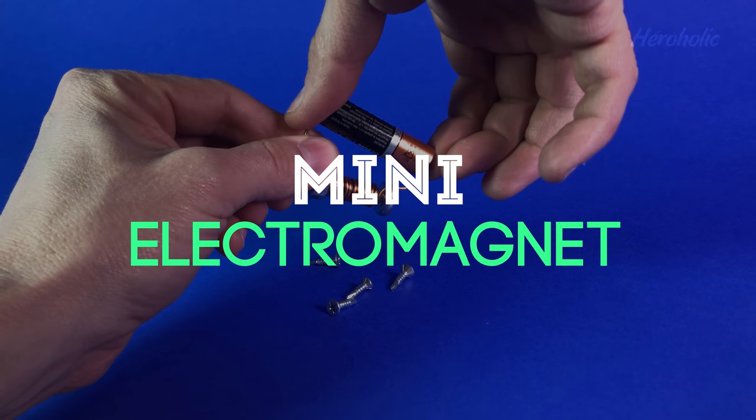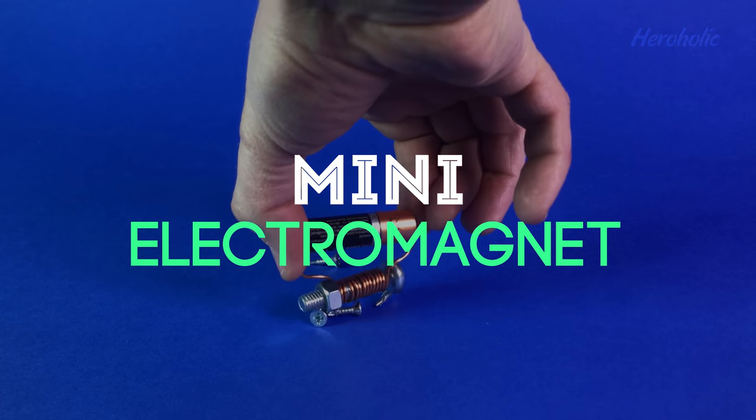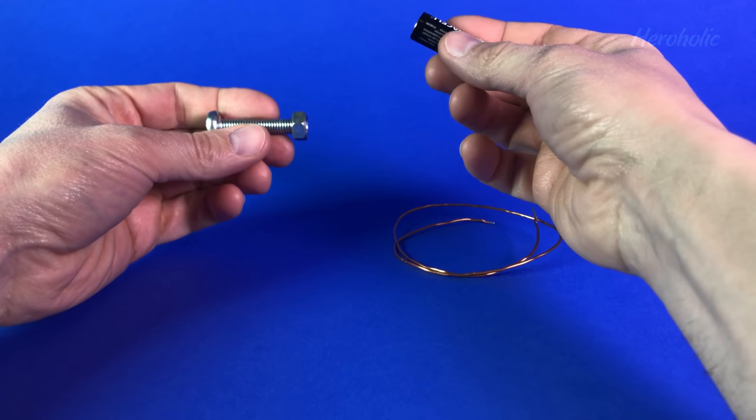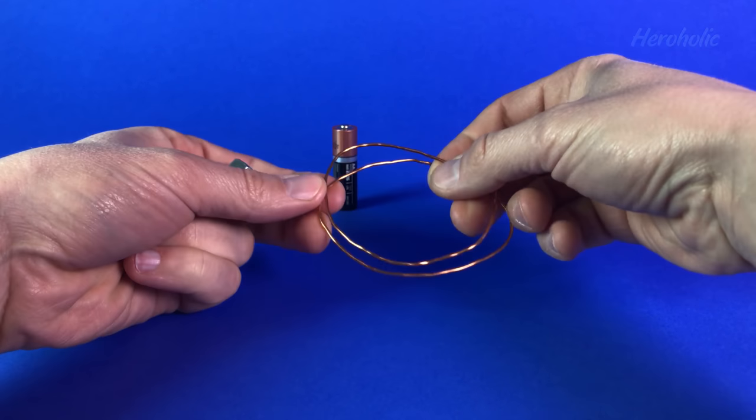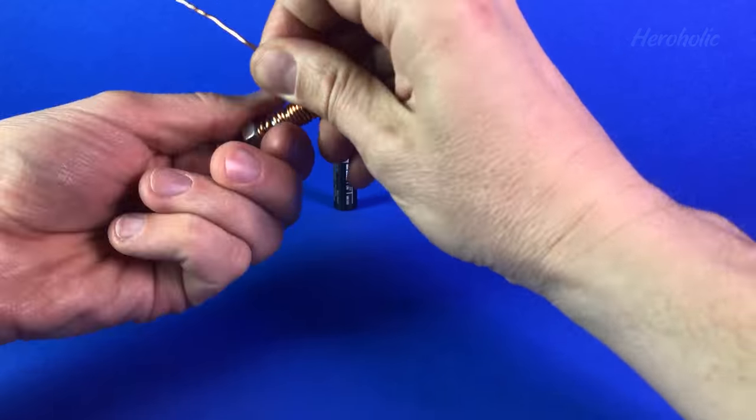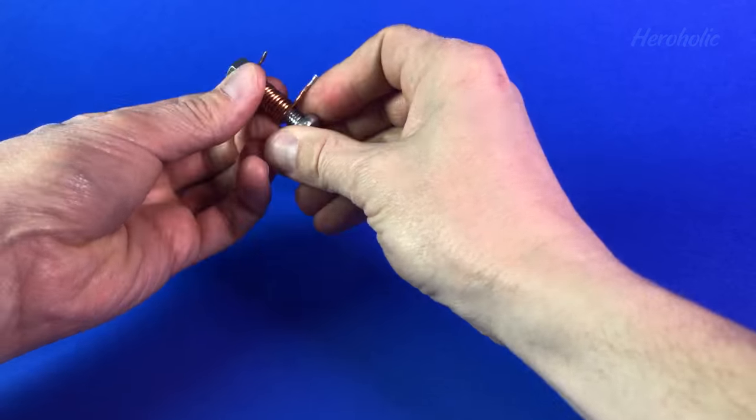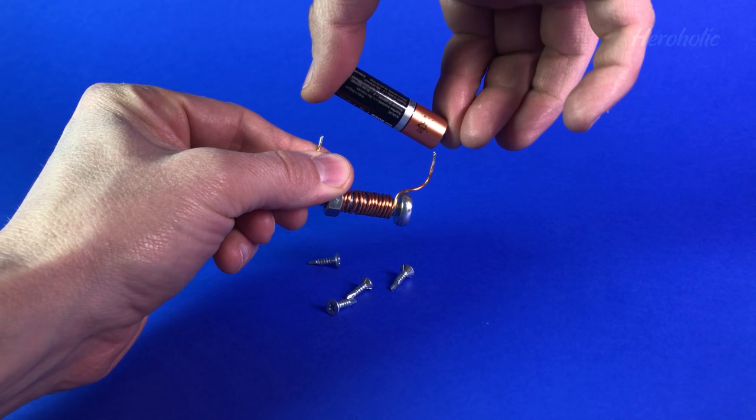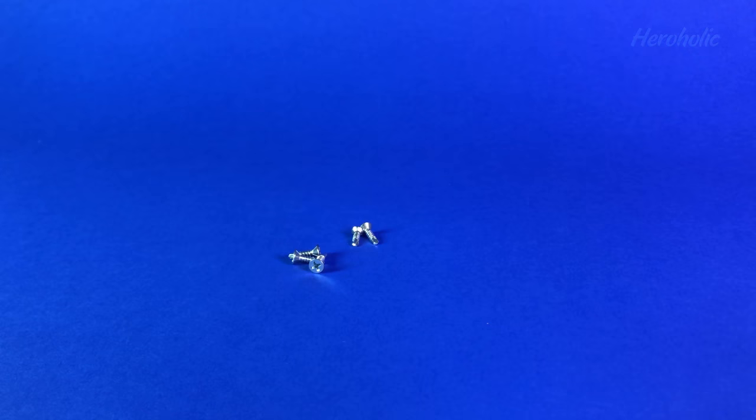Simple electromagnet. Only those who dropped out of school don't know this experiment. But let's see how easy it is to perform it. Just put the copper wire on a screw. Then, connect each end to a battery.